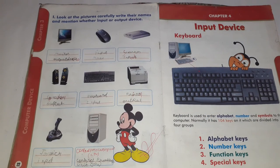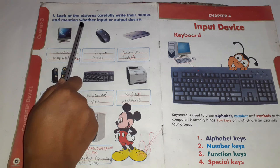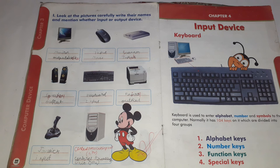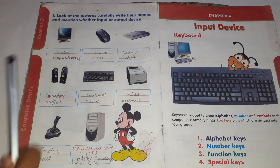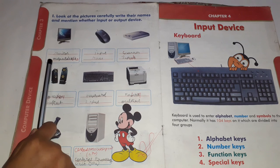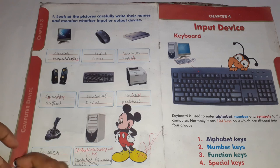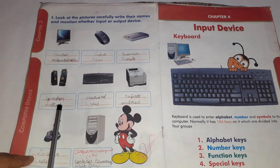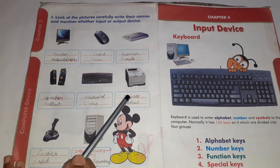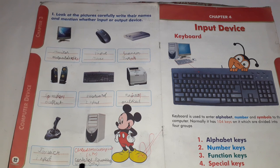So students, here is an exercise. Look at the picture carefully and write the name and mention whether it is an input or output device. Monitor is the output device. Speaker is the output device. Keyboard is the input device. Printer is the output device. Joystick is the input device. And central processing unit is the CPU.